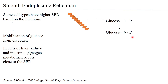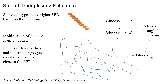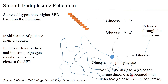Glucose-1-phosphate is then converted to glucose-6-phosphate. In that form, glucose cannot leave the cell because the membrane is impermeable to glucose-6-phosphate. It must be converted to glucose, which is then released through glucose transporters. This conversion is carried out by the smooth ER, which has a surface membrane protein called glucose-6-phosphatase that removes the phosphate from glucose. Deficiency of glucose-6-phosphatase is associated with the glycogen storage disease known as von Gierke disease.